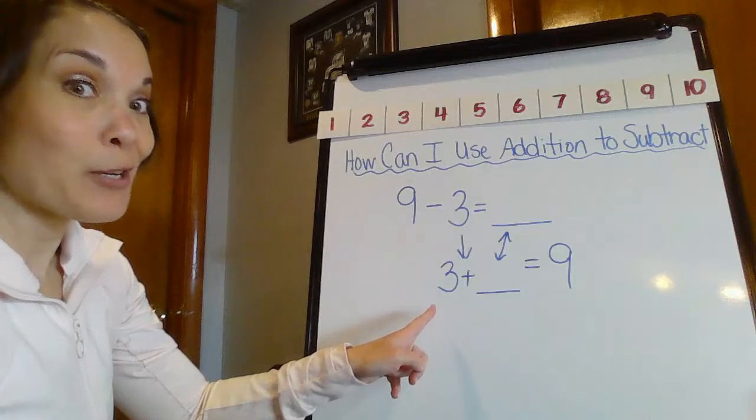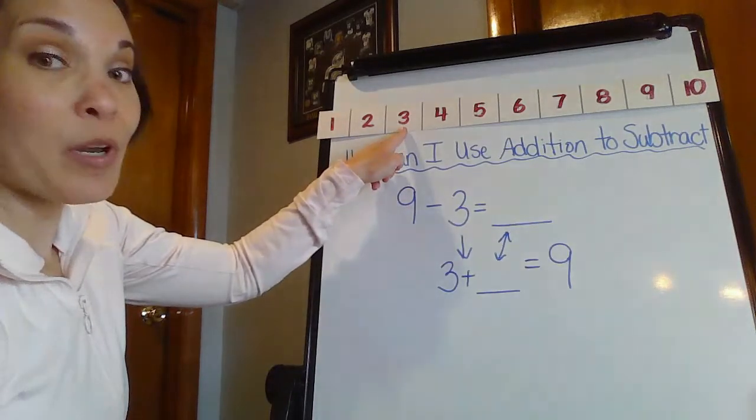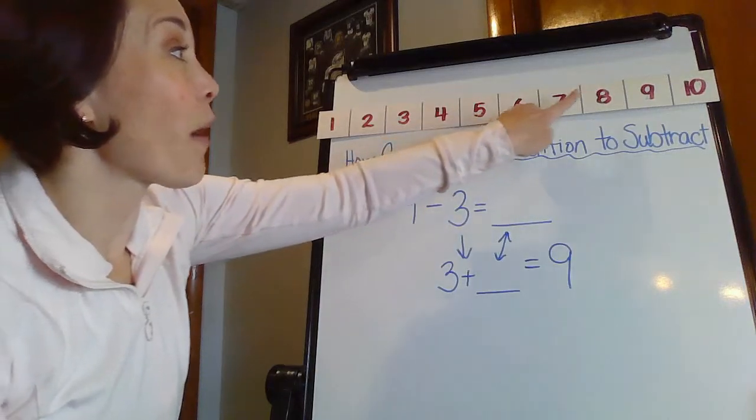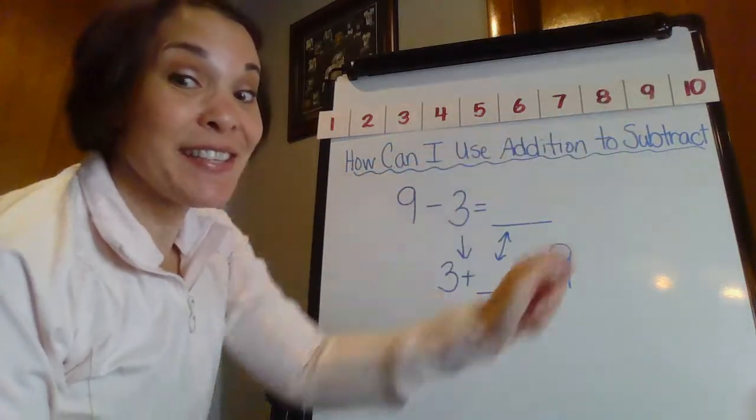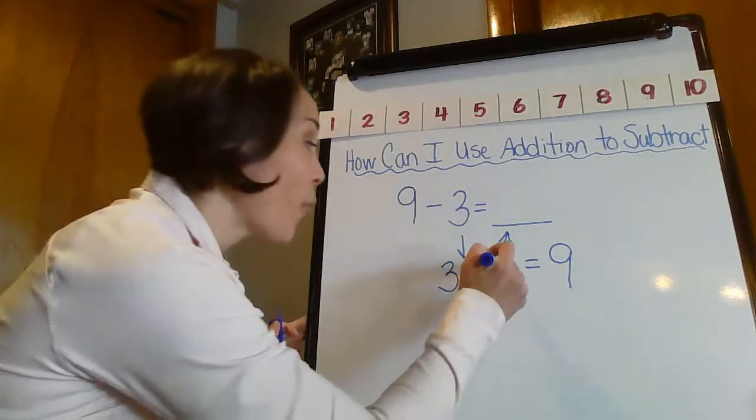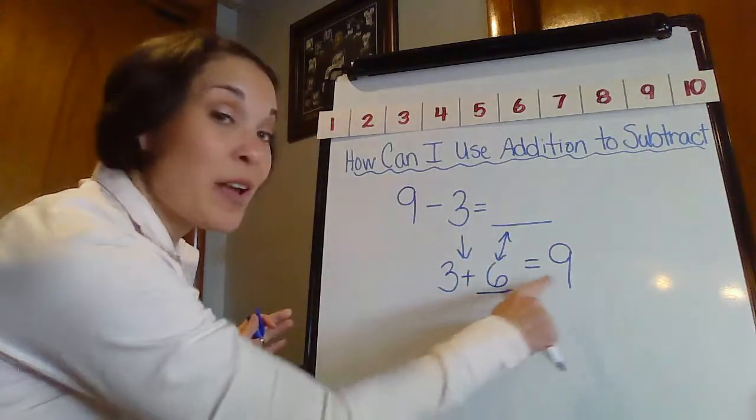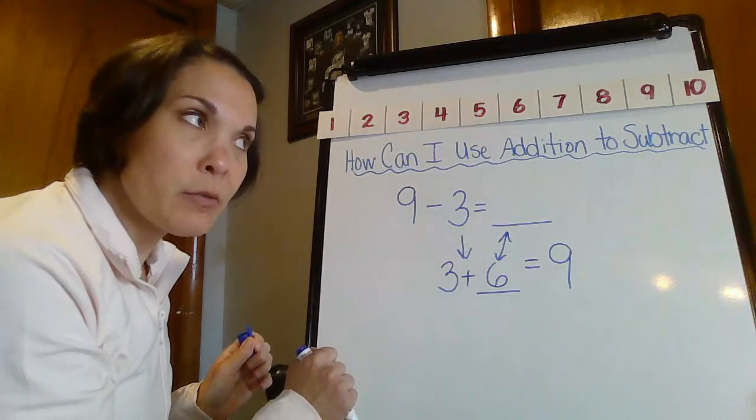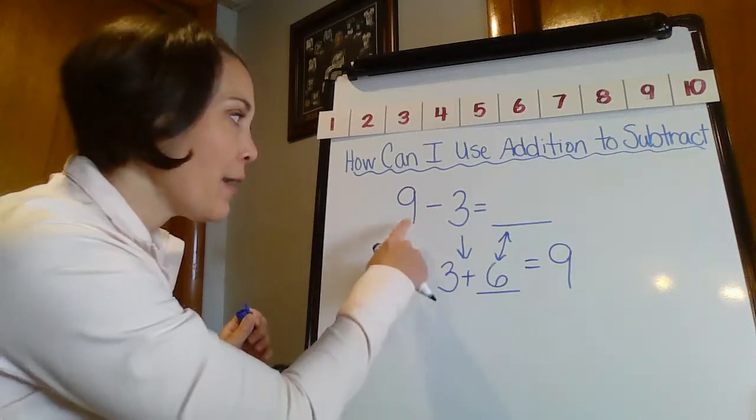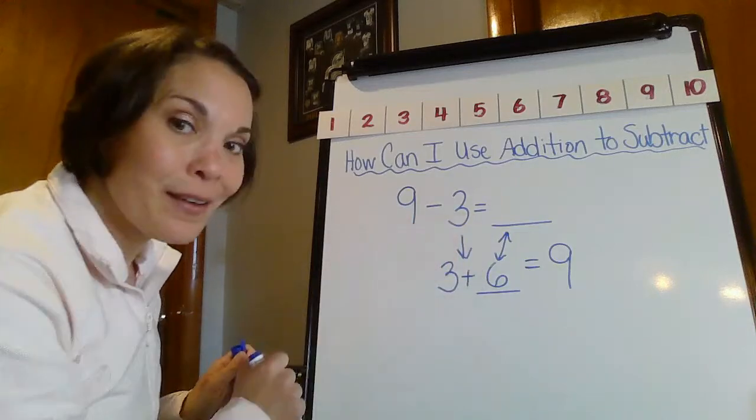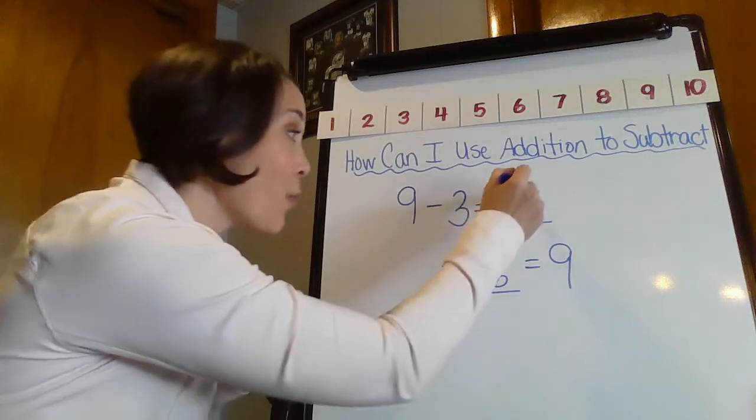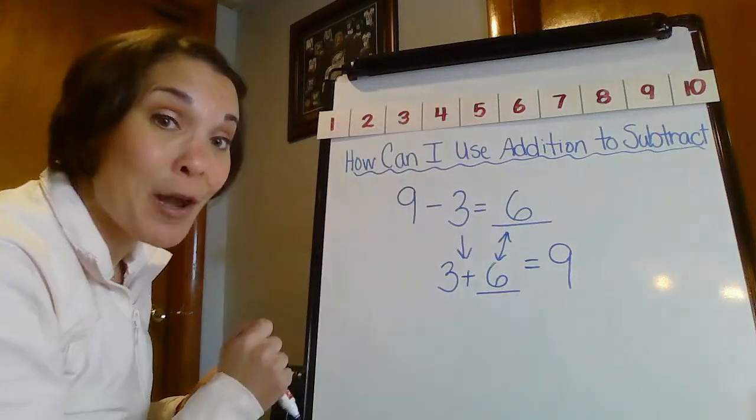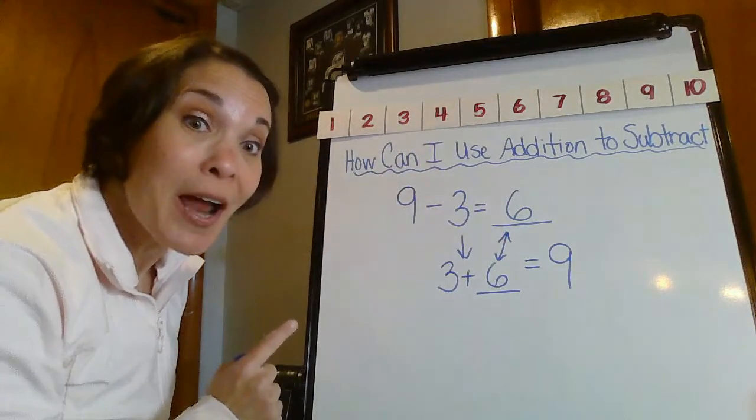Let's use our number line too. 3, and how many more hops to get to 9? 1, 2, 3, 4, 5, 6. So therefore, 3 plus 6 equals 9. Didn't we kind of figure that out before? 9 take away 3 is going to equal 6. Remember when we were figuring out counting back and then using that number line? We got 6 two times there too.